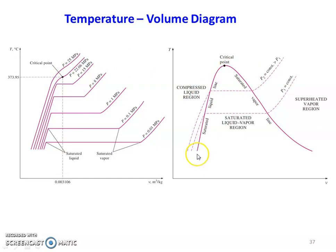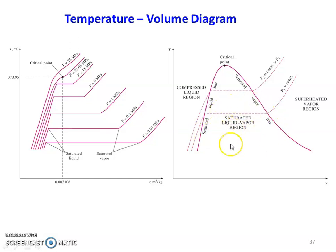So in the diagram, the left-hand curve is the saturated liquid line and the right-hand curve is the saturated vapor line. The region between them is the wet steam region. The left-hand side is the compressed liquid region or unsaturated liquid region. The right-hand side is the superheated vapor region. The point where both lines meet is the critical point.